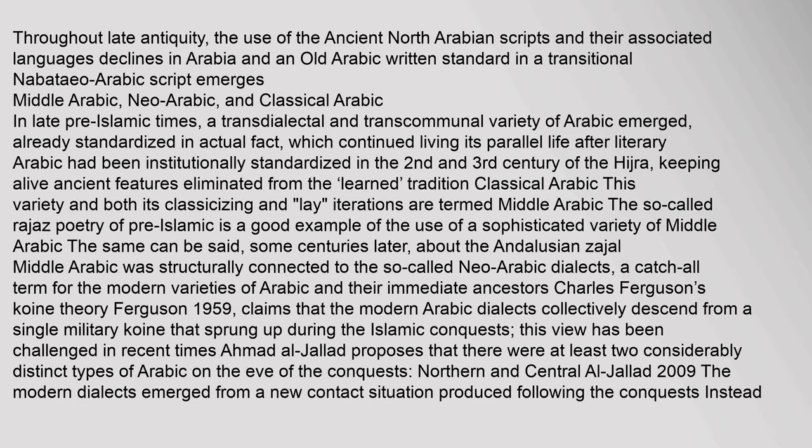Fragments of Old Arabic prose are attested in the Nabataean script across Northern and Central Arabia. Throughout late antiquity, the use of the ancient North Arabian scripts and their associated languages declines in Arabia, and an Old Arabic written standard in a transitional Nabataeo-Arabic script emerges. In late pre-Islamic times, a transdialectal and transcommunal variety of Arabic emerged, already standardized in actual fact, which continued living its parallel life after Literary Arabic had been institutionally standardized in the second and third century of the Hijra, keeping alive ancient features eliminated from the tradition.